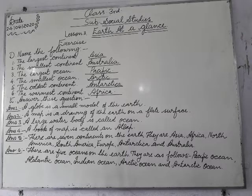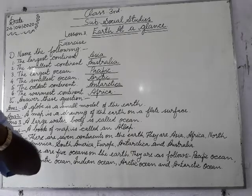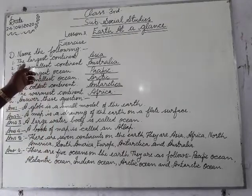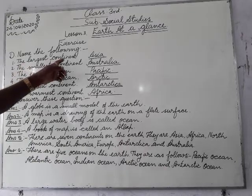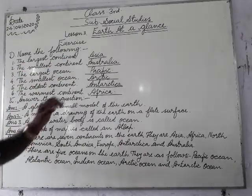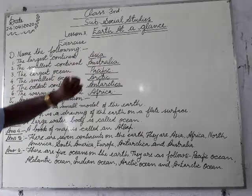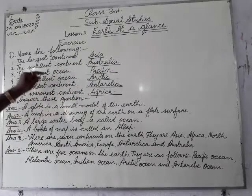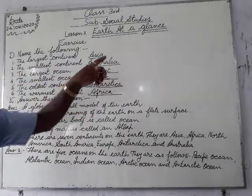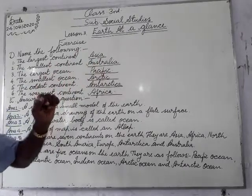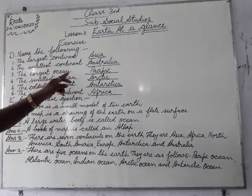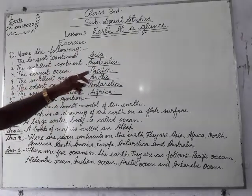Put answer in one word. The largest continent is Asia. The smallest continent is Australia. The largest ocean is Pacific.